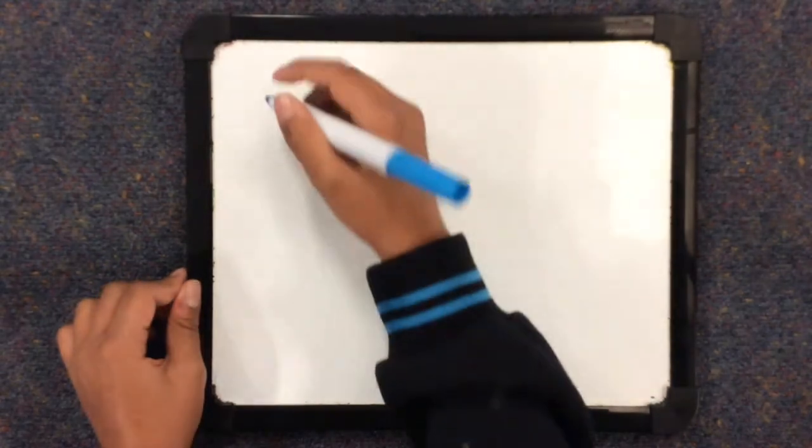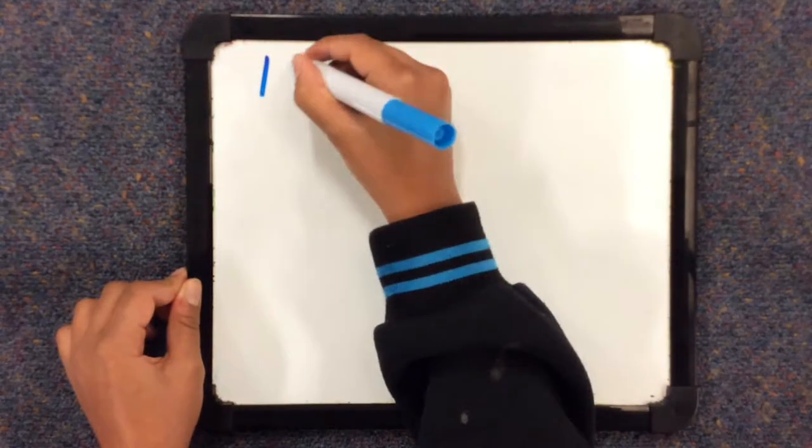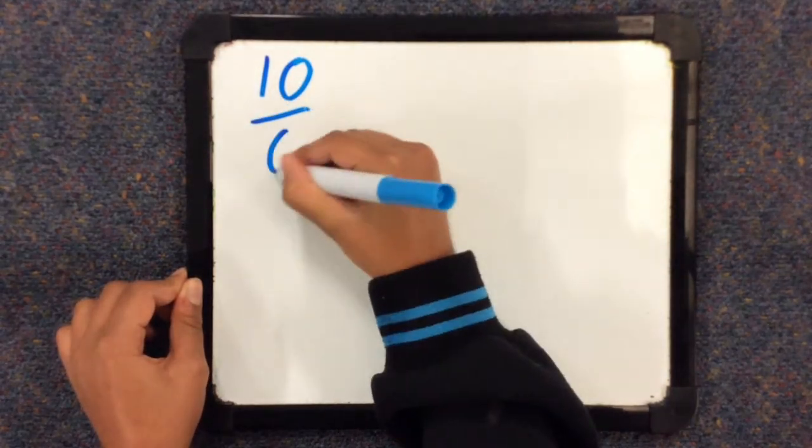So first what we're going to do is write down our mixed fraction. We're going to do a really simple one, so 10 over 6.